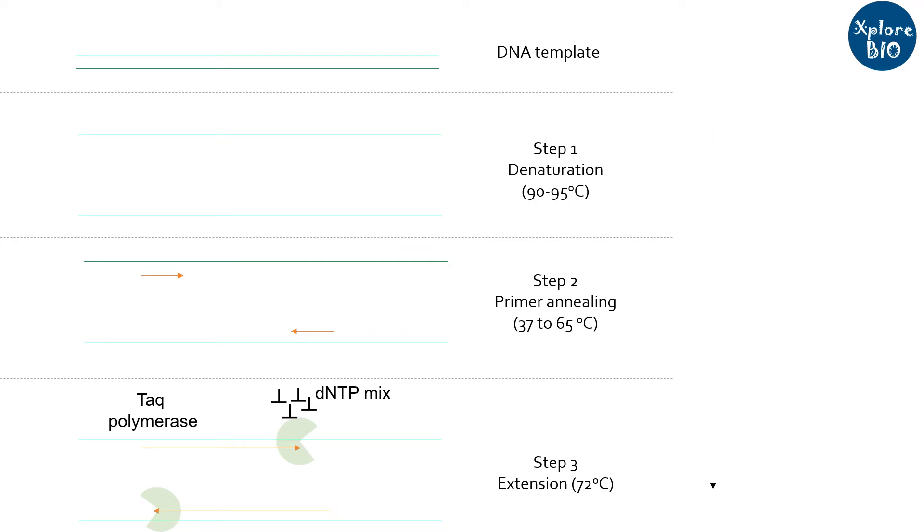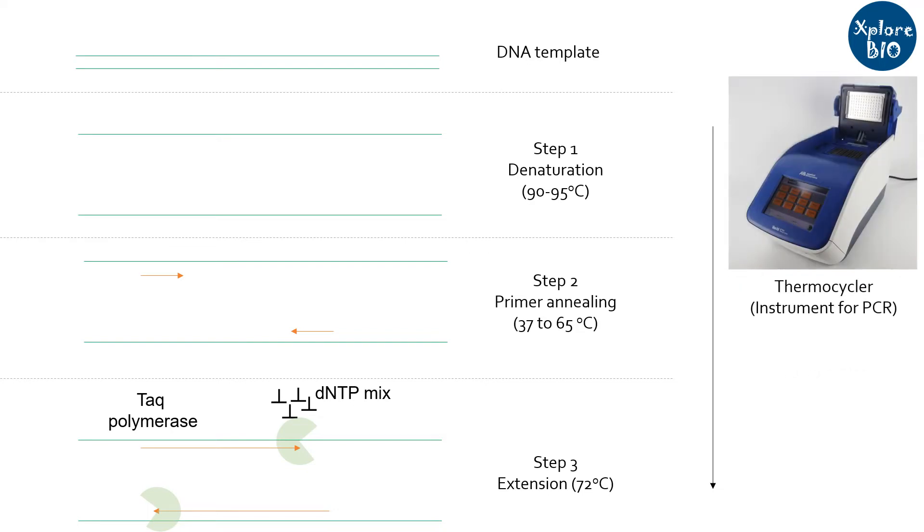The three steps are performed at different temperatures which is programmed in an instrument called a thermocycler. This is repeated for about 20 to 30 cycles till sufficient copies of amplified products get accumulated.